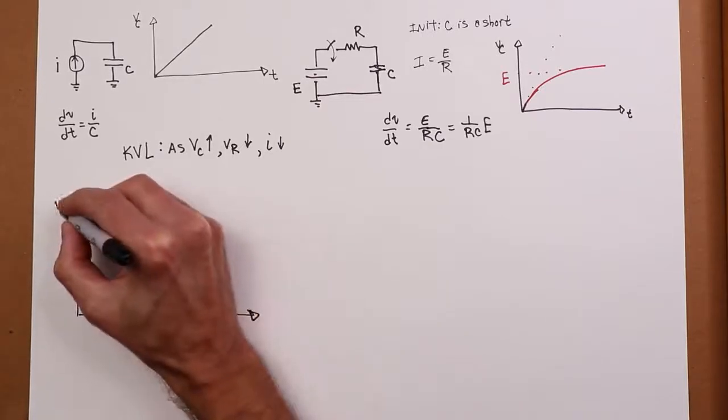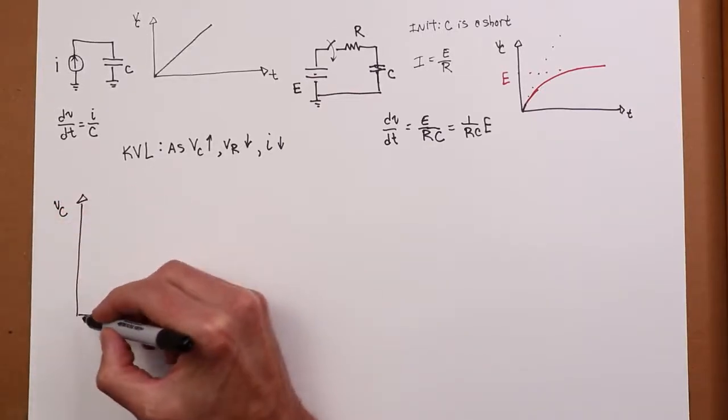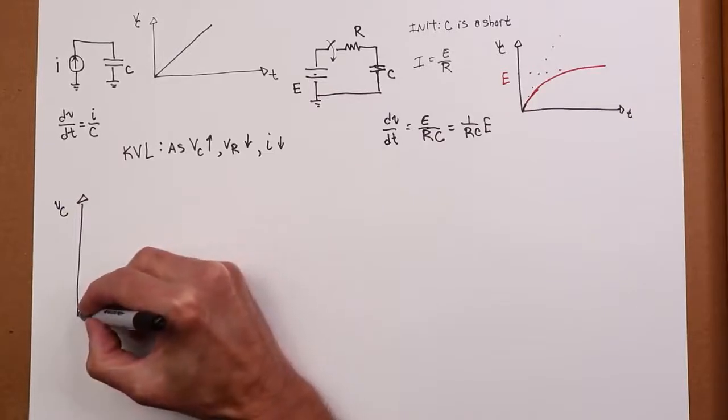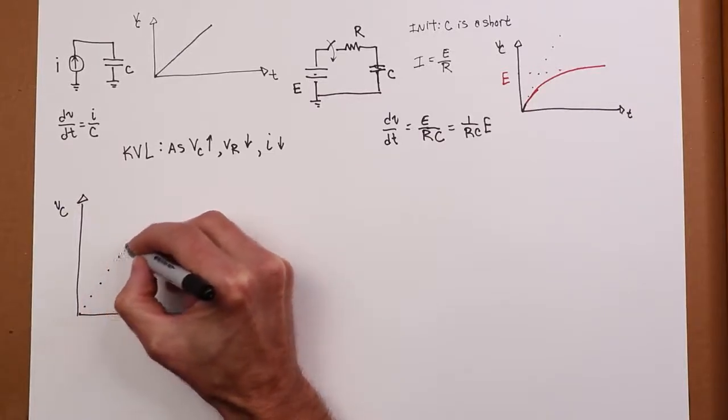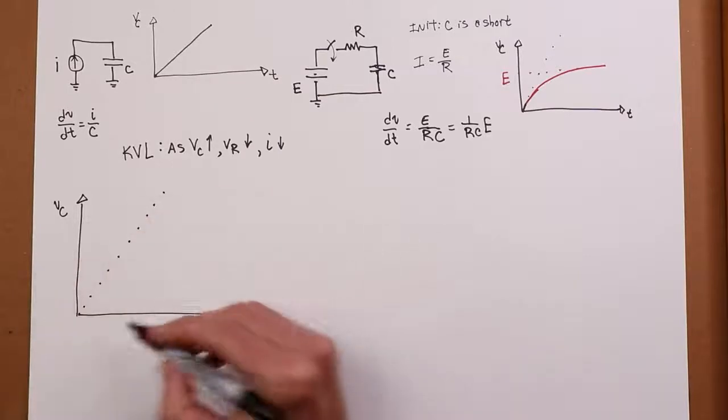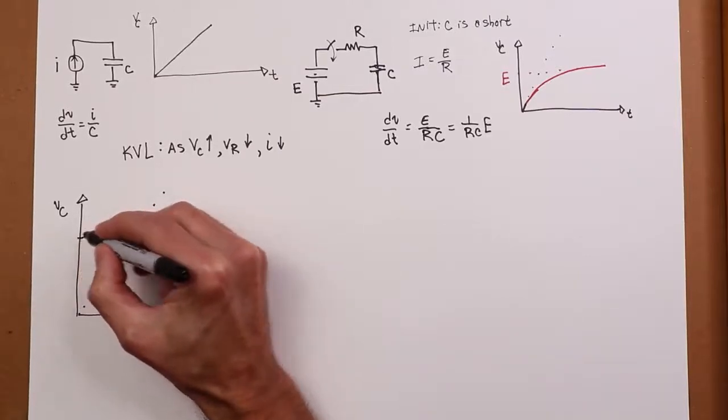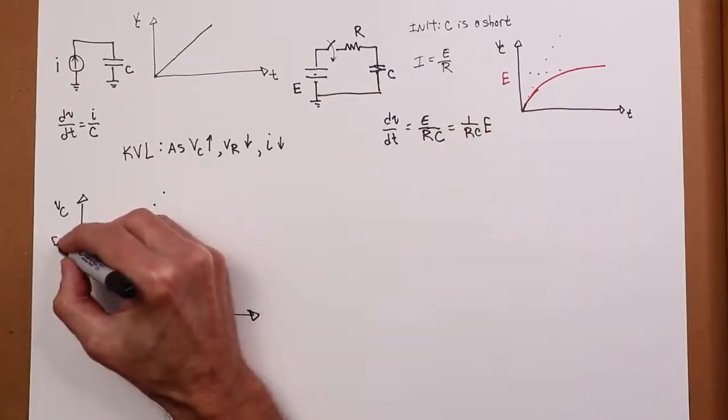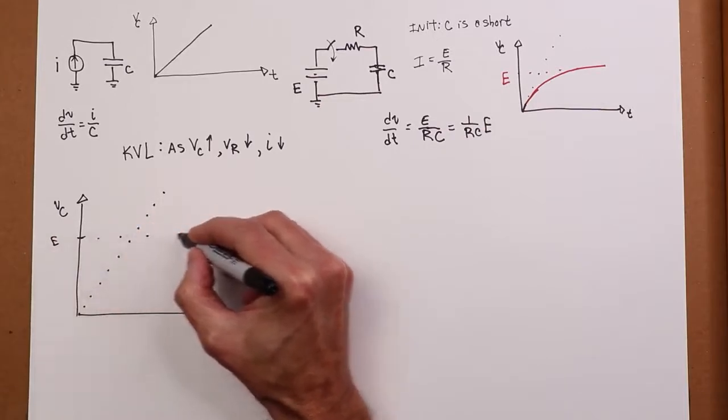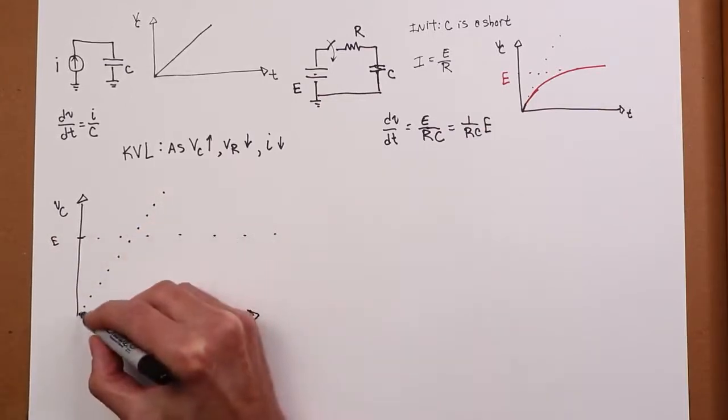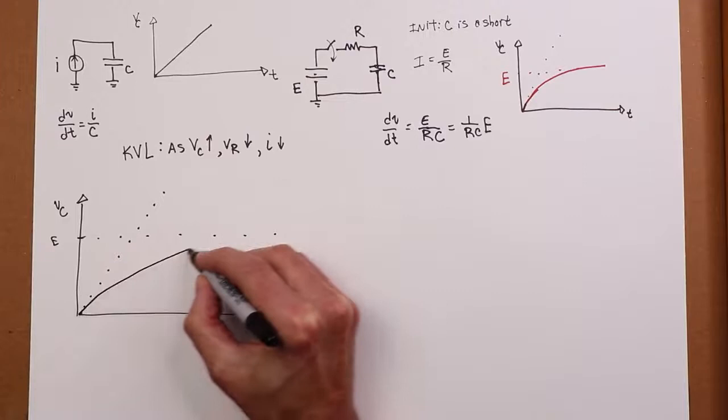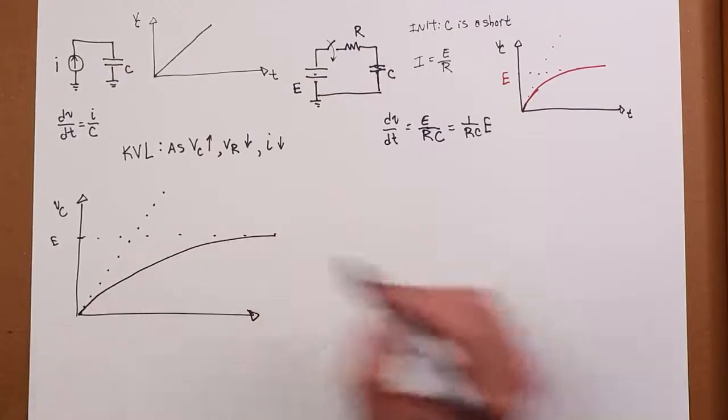Let's take a closer look here. So if I were to plot VC over here, this thing is going to initially take off at this rate, but then fall down so that it hits some value over here, like E. We get something that kind of goes like this. Maybe not the best drawing in the world, but you get the idea.